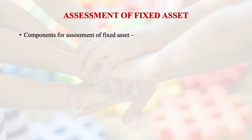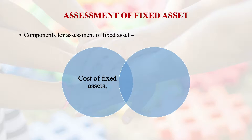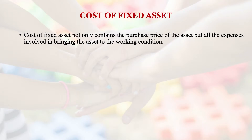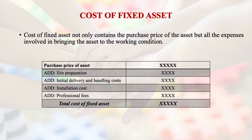When assessing a fixed asset, two important things must be considered: the cost of the fixed asset and the depreciation value associated with it over its useful life. The cost of a fixed asset includes not only the purchase price but also expenses involved in bringing the asset to working condition — such as site preparation cost, initial delivery and handling costs, installation costs, and professional fees of the service provider.